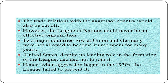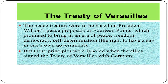Two major countries, Soviet Union and Germany, were not allowed to become members for many years. The United States, despite its leading role in the formation of the League, decided not to join it. Hence, when the aggression began in the 1930s, the League failed to prevent the Second World War.